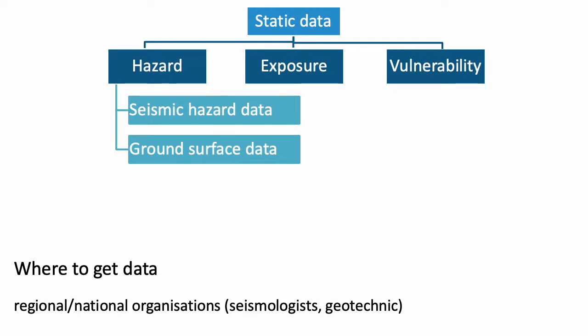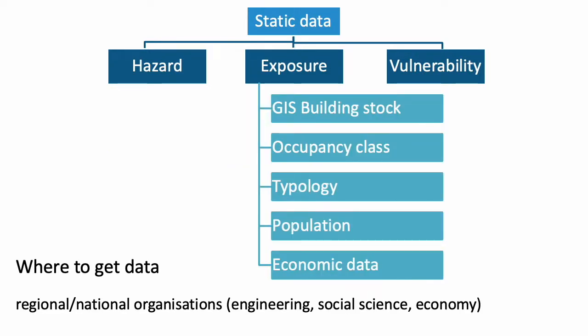As a second layer, in order to model the hazard, you need information about the ground surface. This is mostly for VS30, in order to take into account the amplification effect of the site. Because whether you are sitting in soft soil or hard soil makes quite a difference when generating ground shaking.